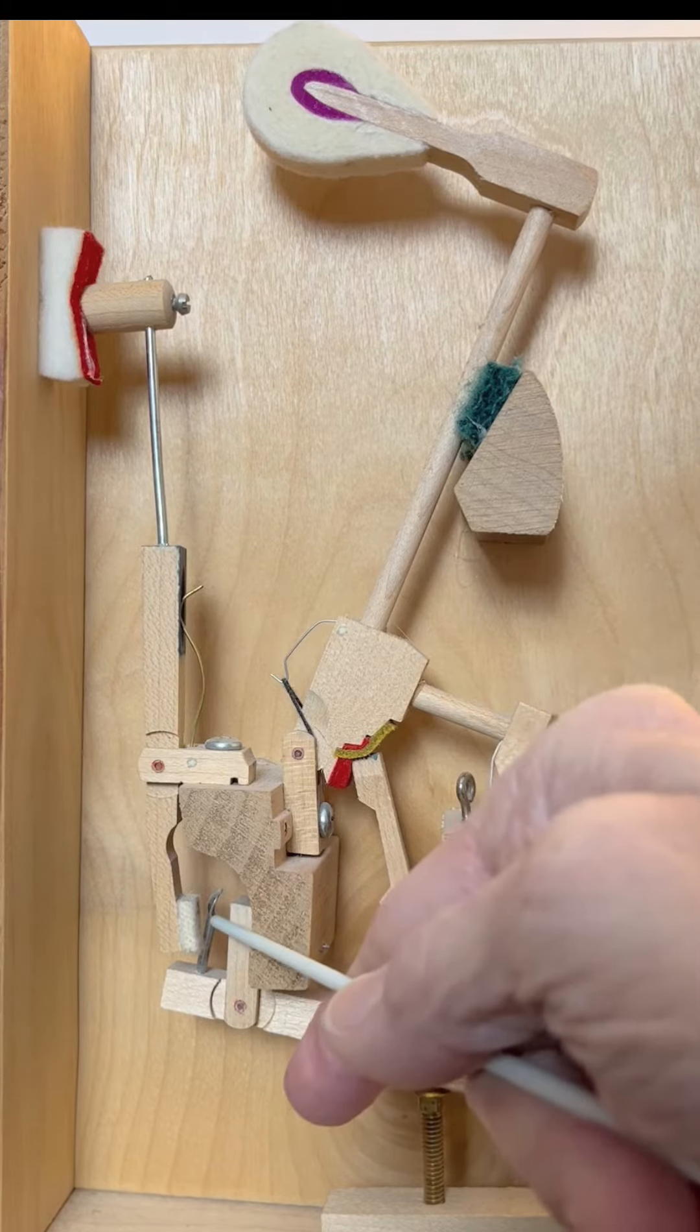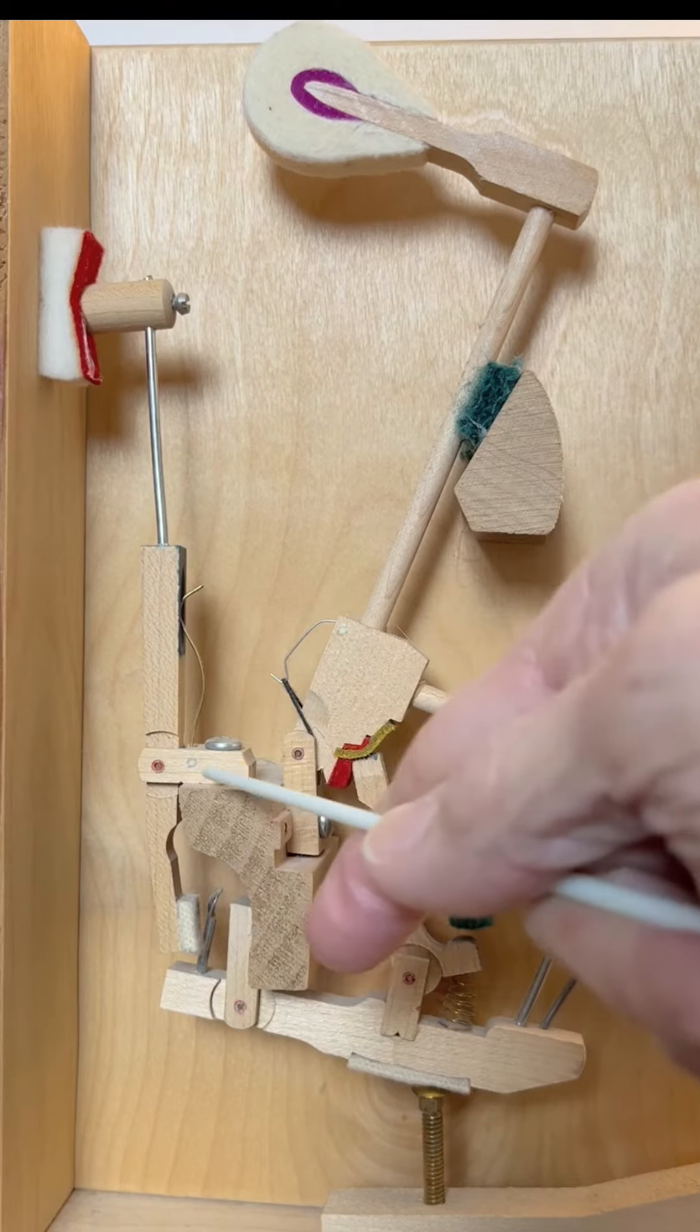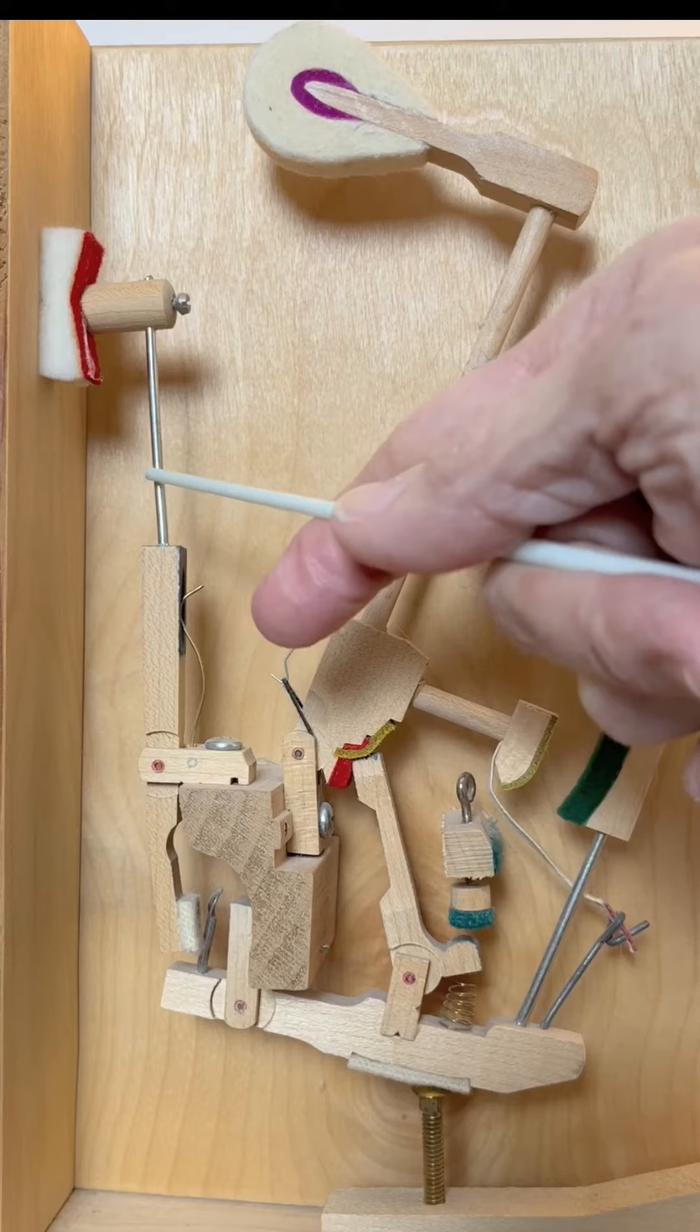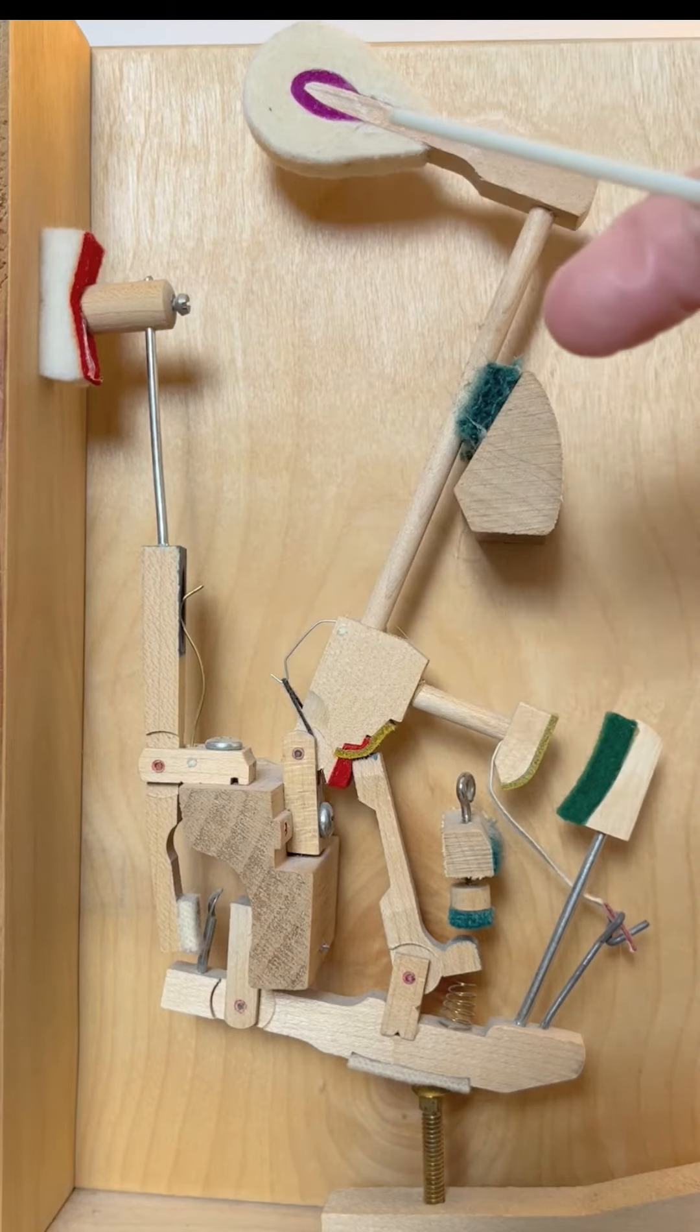This is the damper spoon. This is the damper lever. This is the damper flange. This is the damper wire. This is the damper head.